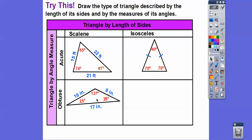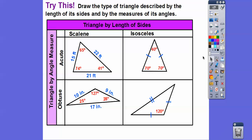An obtuse isosceles triangle has one obtuse angle and two equal sides. The double tick marks on those two sides indicate they are equal to each other but not equal to the third side.